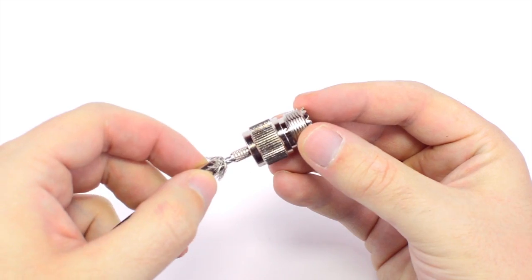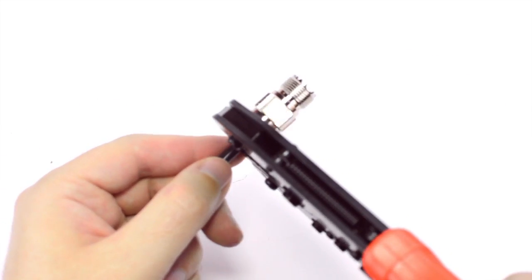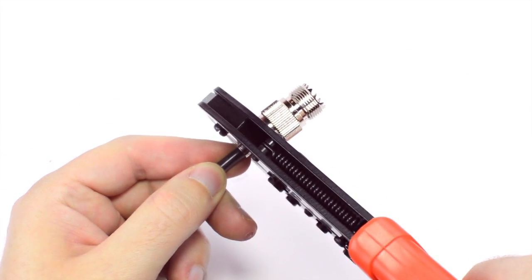Then slide up the ferrule to the base of the connector, folding the shield with it. Crimp the ferrule onto the outer jacket to complete termination.